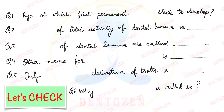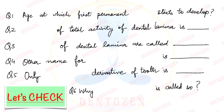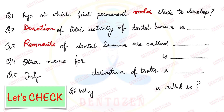Let's check if you have understood the topic. Try to answer these questions: At what age does the first permanent molar start to develop? What is the duration of total activity of the dental lamina? What are the remnants of dental lamina called? What is another name for vestibular lamina? What is the only ectodermal derivative of a tooth? And why is ectomesenchyme called ectomesenchyme?